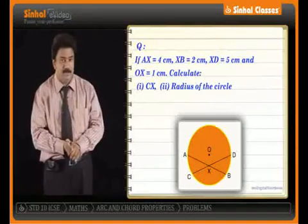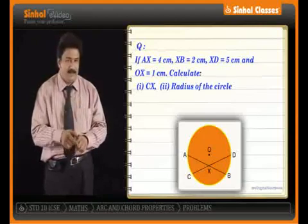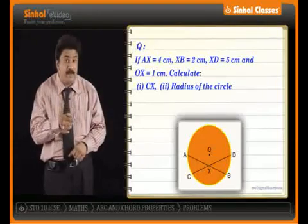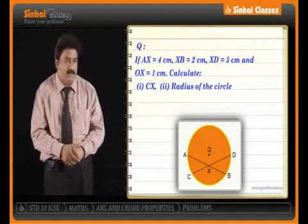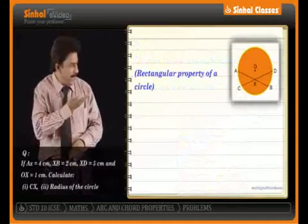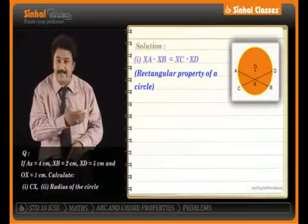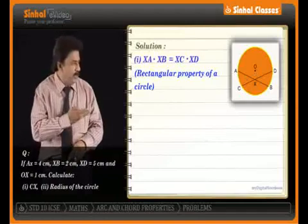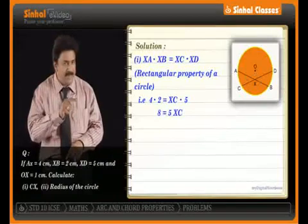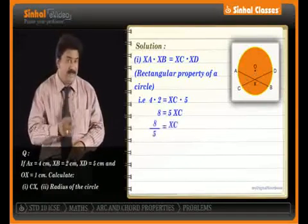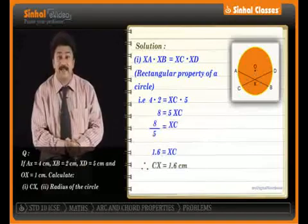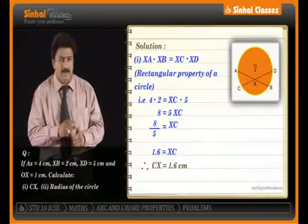First, we'll find CX. Chords AB and CD intersect in the interior of the circle. Therefore, by using the rectangle property of the circle: XA × XB = XC × XD, that is 4 × 2 = XC × 5, which gives 8 = 5·XC, so XC = 8/5 = 1.6 cm. The first part is done: CX = 1.6 cm.